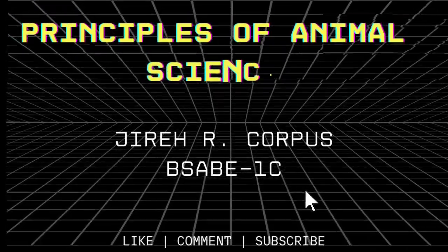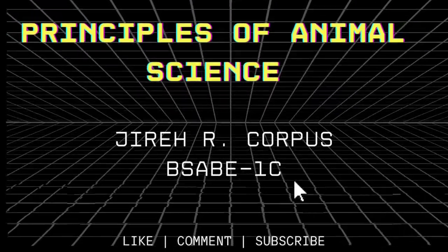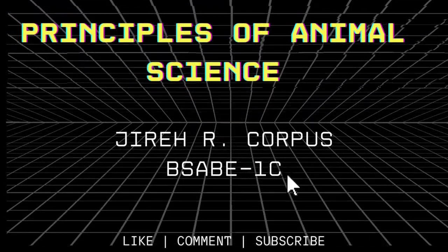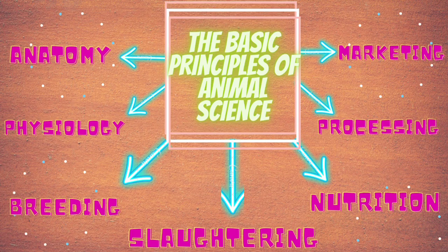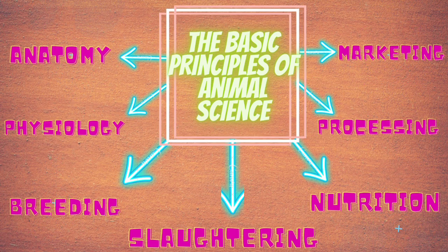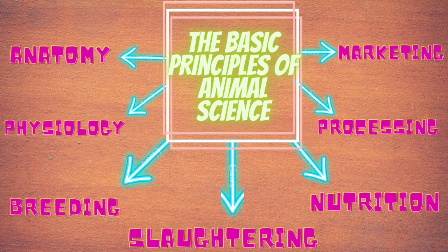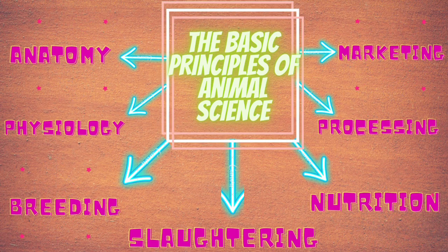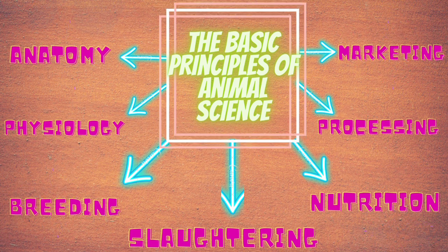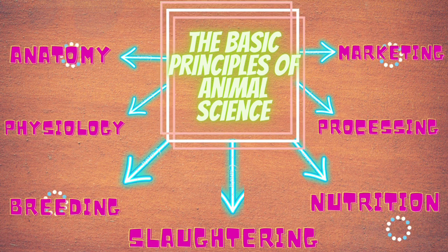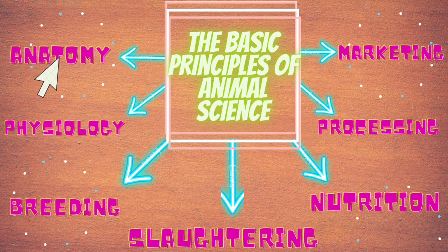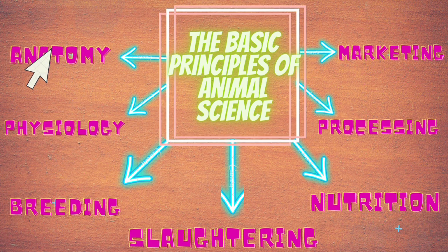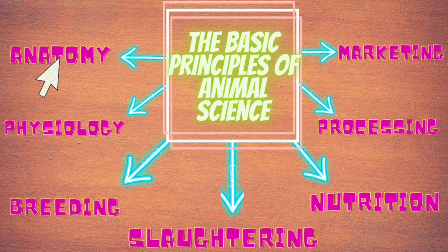Principles of Animal Science by Jerry R. These are the basic principles of animal science: anatomy, physiology, breeding, slaughtering, marketing, processing, and nutrition.